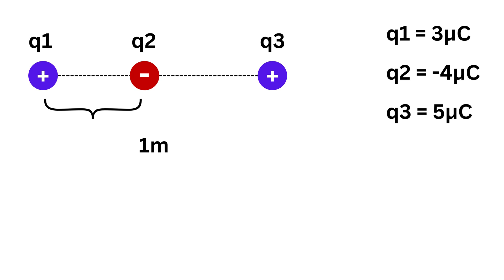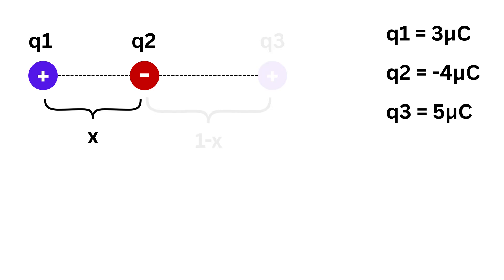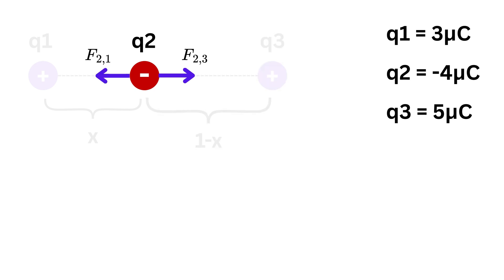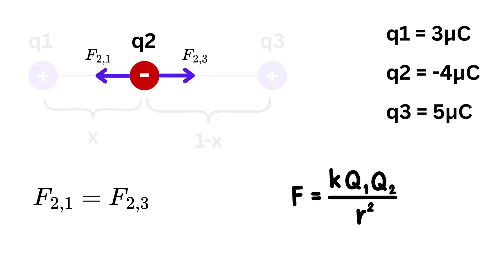We assume q2 is placed between q1 and q3 at a distance x meters from q1, so the distance between q2 and q3 is (1 − x) meters. Applying Coulomb's Law: since q1 and q2 have opposite charges, they attract, so F(2,1) points toward q1 — to the left. Similarly, q3 and q2 attract, so F(2,3) points toward q3 — to the right. For q2 to be in balance, these two forces must be equal in magnitude.